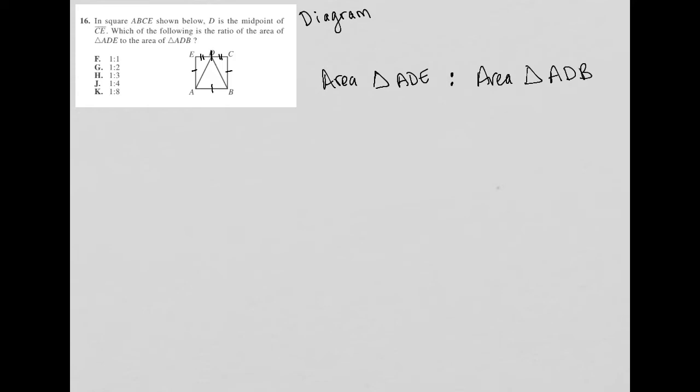So how do I find an area? Well, it's one half base times height for both. Well, what's my base for triangle ADE? I actually don't know. I don't have a number for my base here. So I like to follow this rule, this mental rule that says, if I wish I knew a number, I'm going to just try to plug it in.